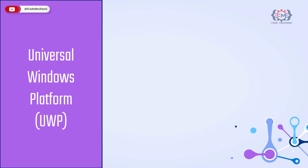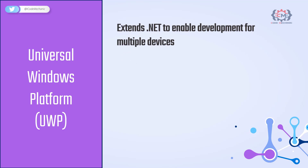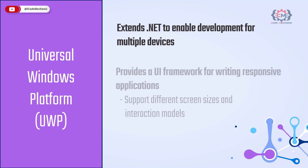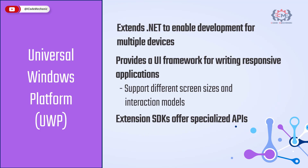Universal Windows Platform or UWP extends the .NET platform to enable development for any Windows device — PC, tablet, phone, Xbox, HoloLens, Surface Hub and IoT Core. UWP provides a UI framework for writing responsive apps that support several screen sizes and interaction models such as touch, mouse, keyboard, game controller and pen. Extension SDKs offer specialized APIs for each device class, such as the holographic capabilities of HoloLens.